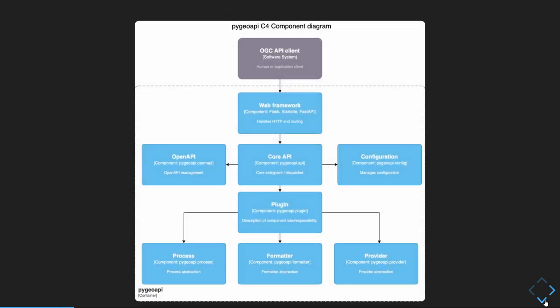This is our C4 architecture diagram of the project. We have a core API in the middle, and we allow it to be used by any downstream web framework in the Python sense. Whether your organization is using Flask, Starlette, or FastAPI, the abstraction allows for any of those web frameworks to be used. We also have a plugin framework which allows you to build out your own data providers, your own output formats, and your own processes.